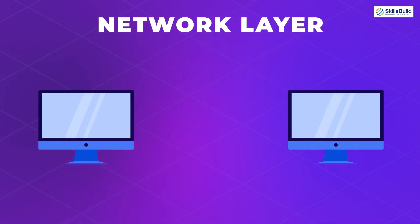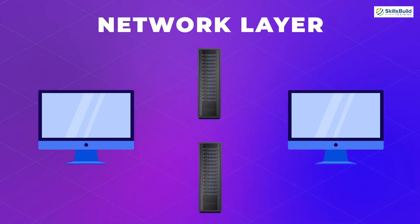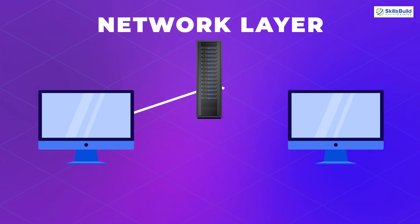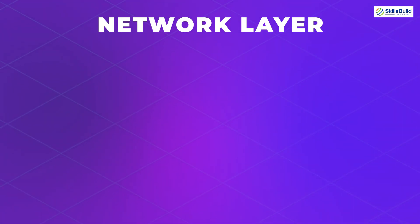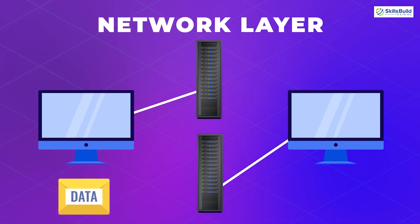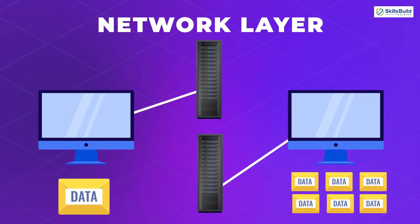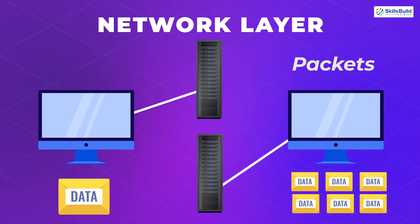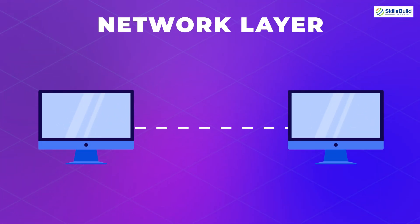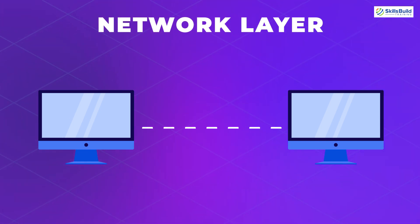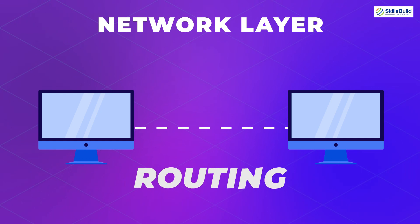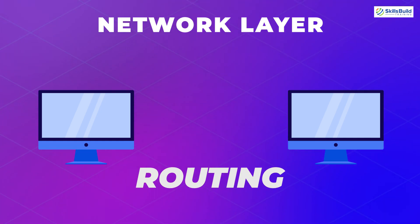The next layer is the network layer, which is responsible for facilitating data transfer between two different networks. If two devices are on the same network, the network layer is not needed. But if they are on different networks, the network layer breaks segments received from the transport layer into smaller parts called packets. On the receiving end, it reassembles those packets and passes them to the transport layer. This layer also finds the best available path for data to reach its destination — a process called routing.